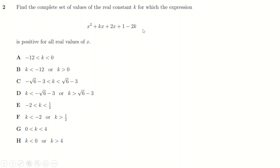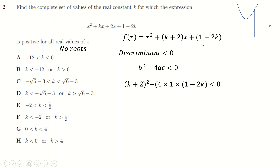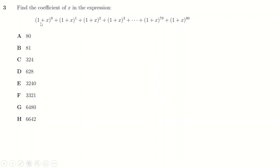Question two: find the set of values for which this quadratic is positive. If it's positive it has no roots — it sits above the x-axis at all times — which means the discriminant is less than zero: b² - 4ac < 0. With a = 1, substituting b and c in, expanding carefully, collecting terms, and factorizing gives a new quadratic with roots at 0 and -12. The answer is -12 < k < 0.